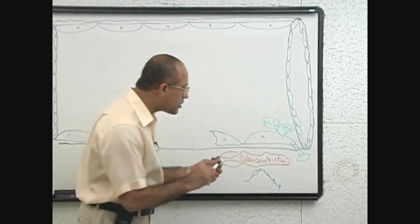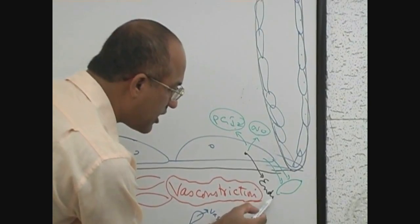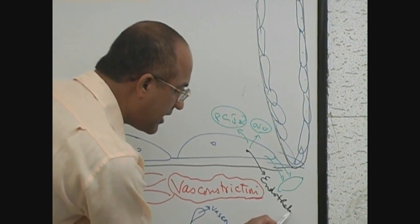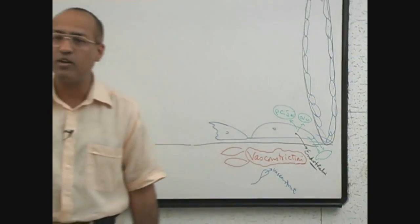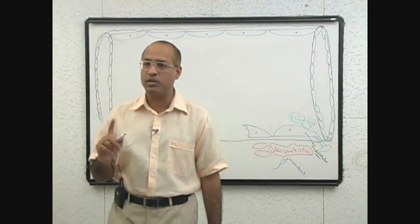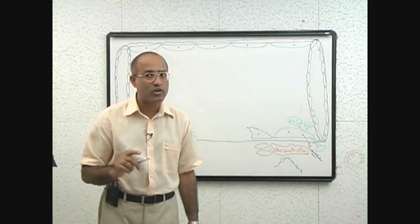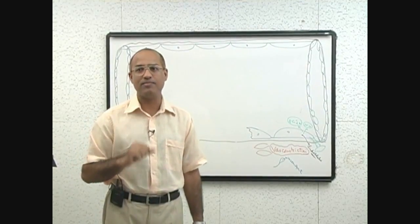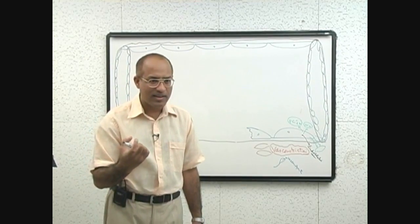Number two, immediately endothelial cells produce a dangerous product, endothelin. Have you heard of it? Endothelin is produced by injured endothelial cells and endothelin acts on the smooth muscle and contracts them, leading to their contraction.